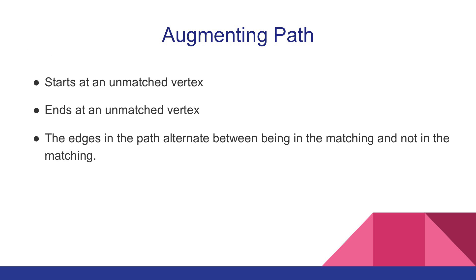A path is an augmenting path if it starts at an unmatched vertex, it ends at an unmatched vertex, and the edges in the path alternate between being in the matching and not being in the matching.